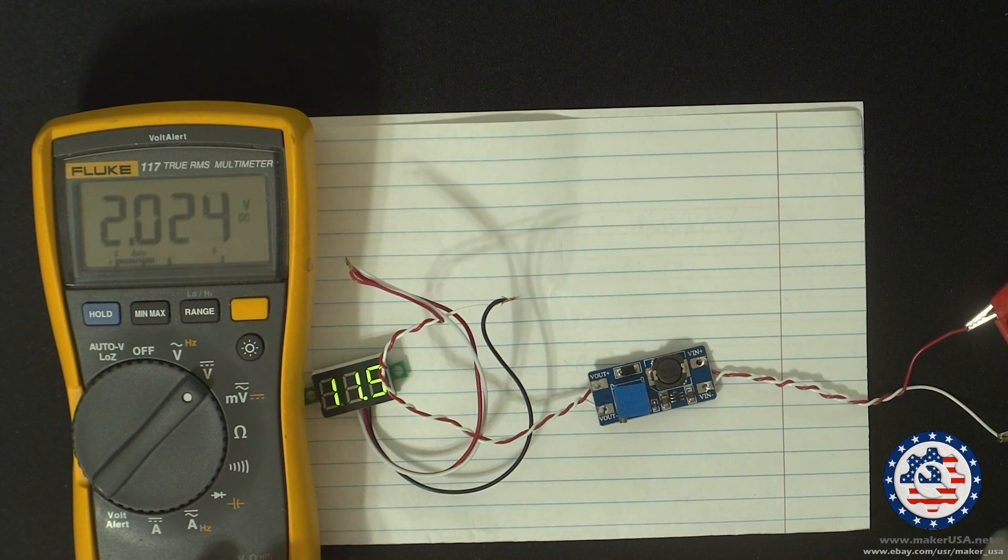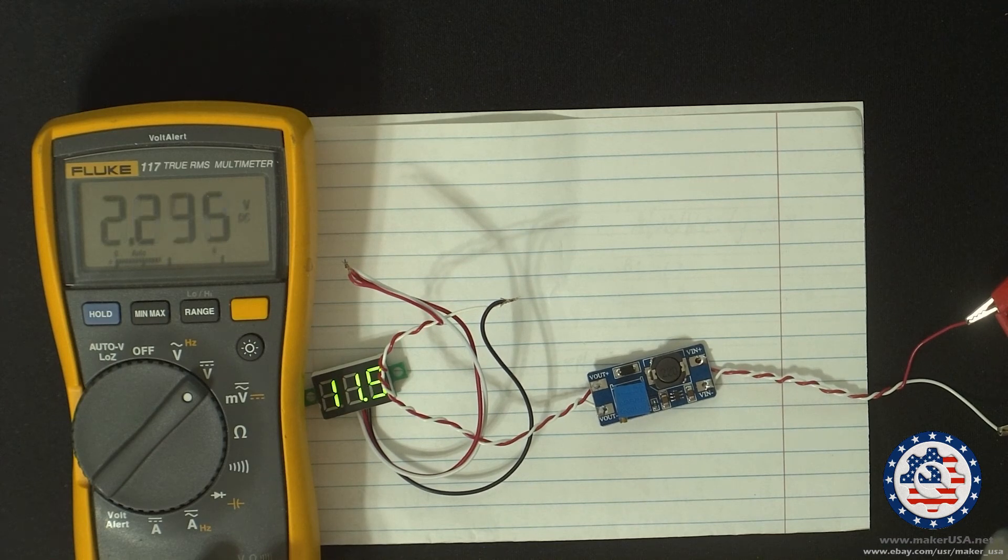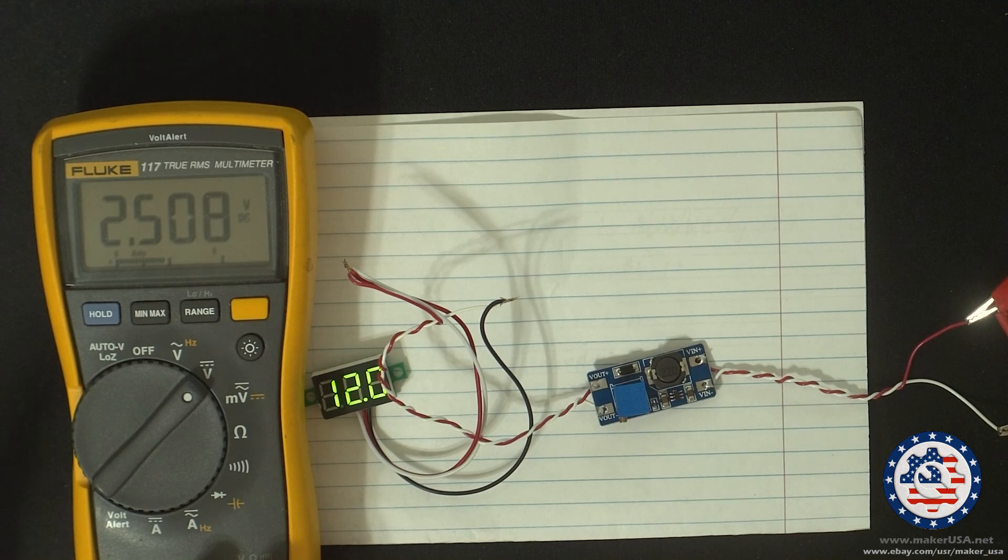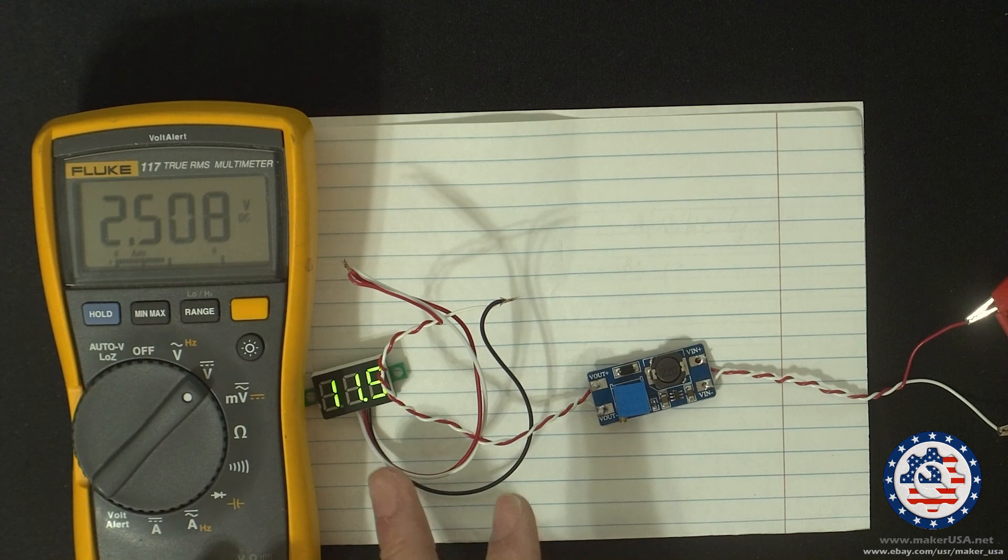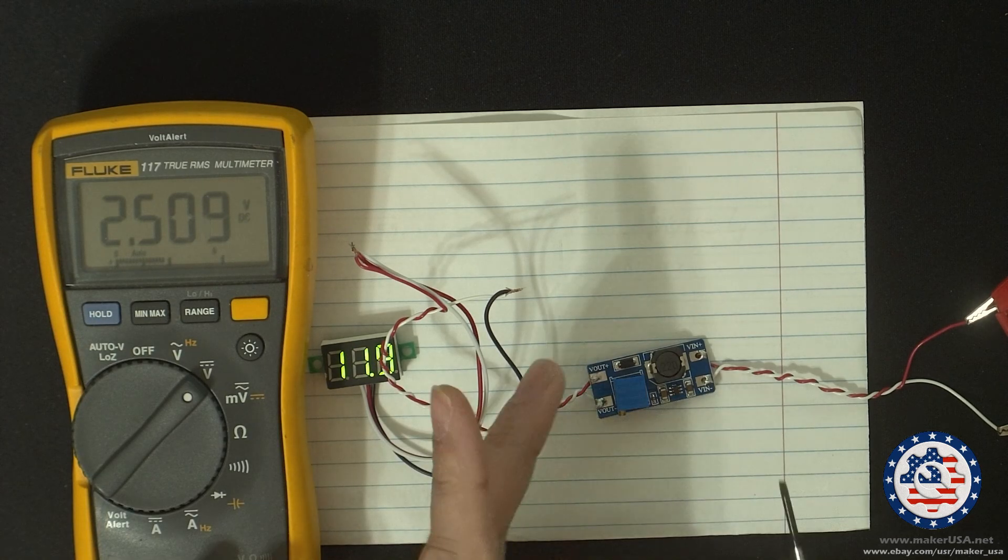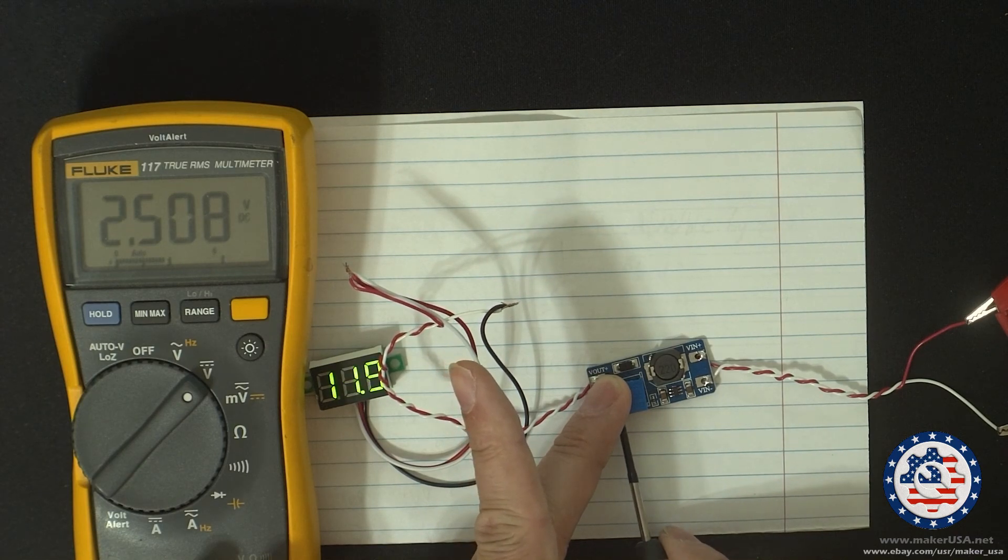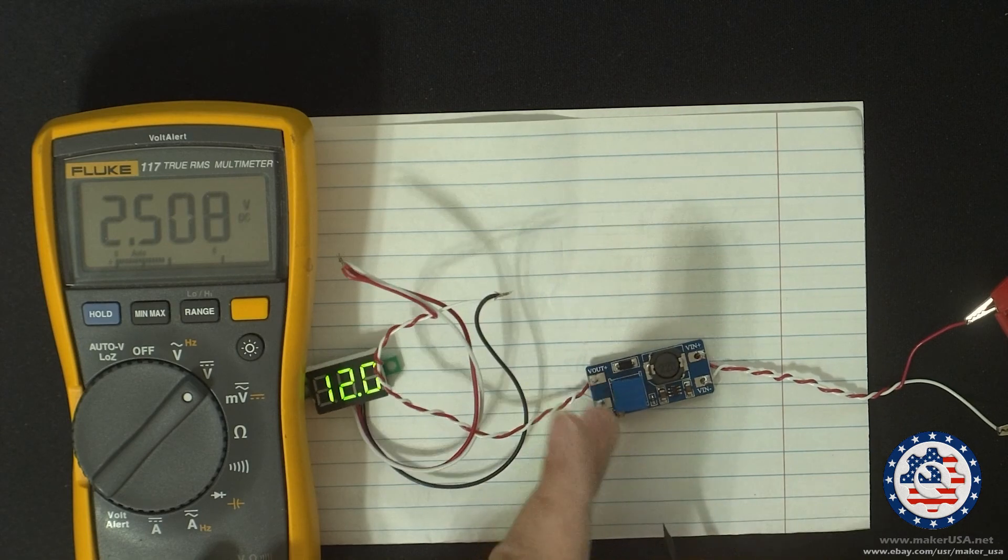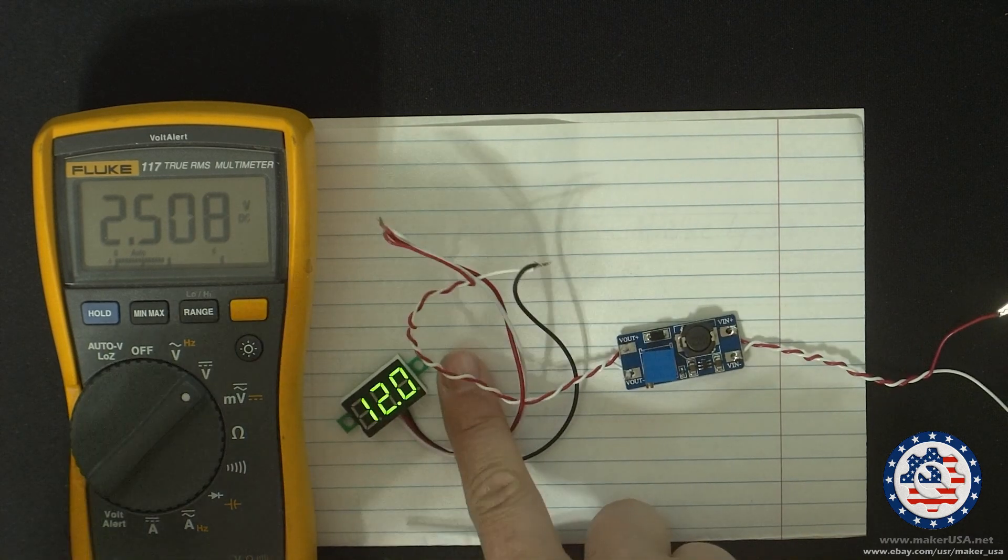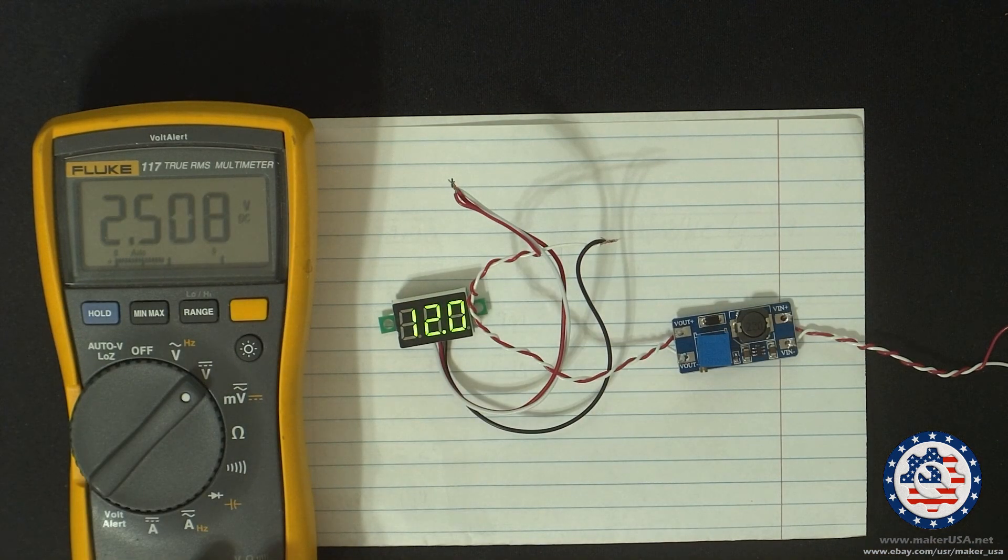Let's increase the input voltage to something like 2.5. So there you go at 2.5, we're getting pretty much... let's see if we can adjust this a bit. Yeah, so with a low input voltage, I'd set it at that. I'm getting steady 12 volts with 2.5 volts in.